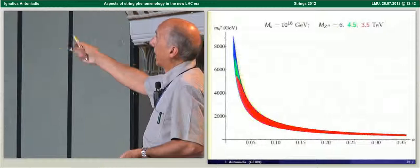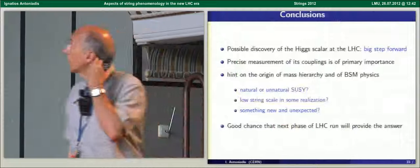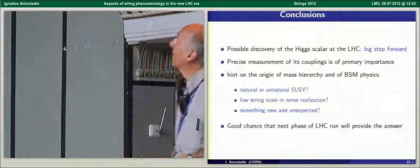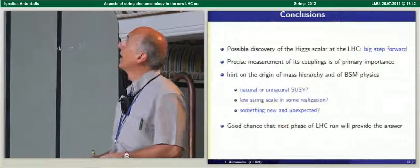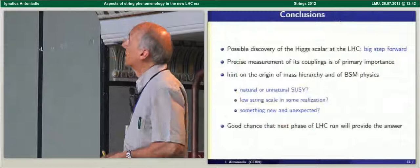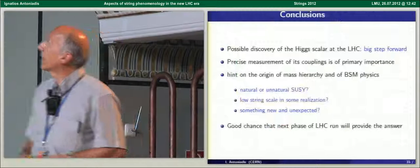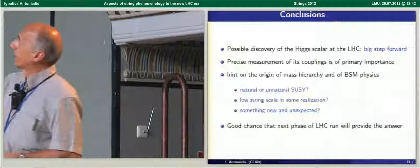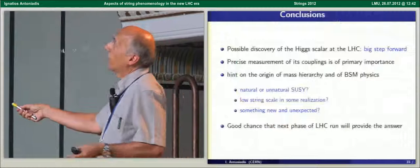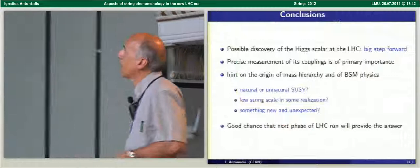Conclusions. I think the first is that the possible confirmation of the discovery of the Higgs at LHC is a big step forward. It's of primary importance of course to measure its couplings which hopefully will happen this year and we hope from this to get a hint of the origin of mass hierarchy. And the question is whether supersymmetry is realized in a natural way, if not if the scale is low in some realization or there is something else. And hopefully there is good chance that in the next round we'll have the answer. Thank you.